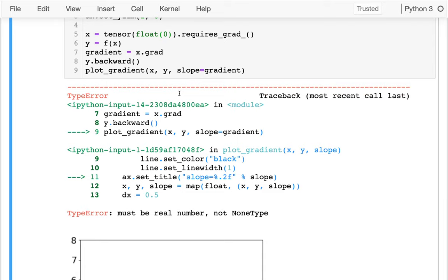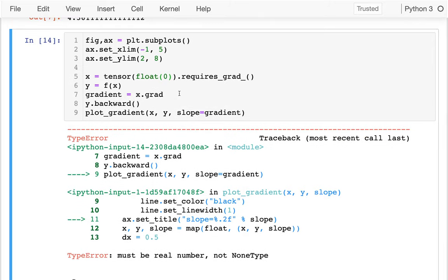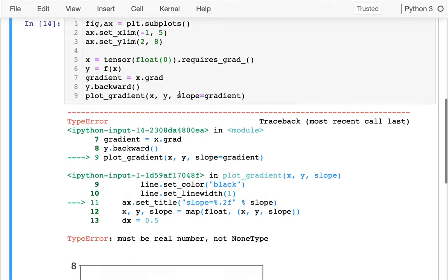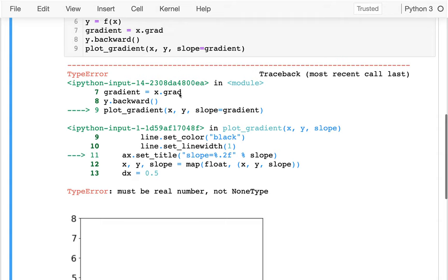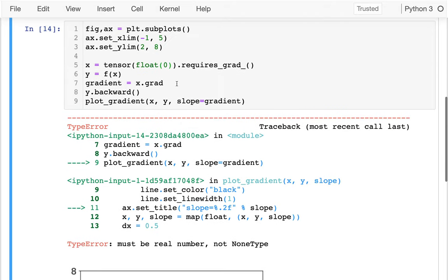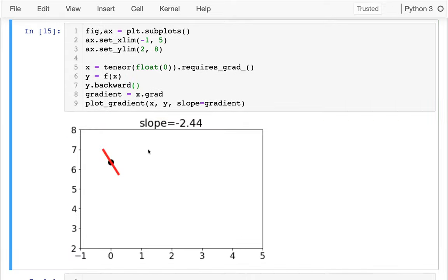And then now what is my problem? So why am I still getting a gradient of zero? Because this is still none. And the reason is that I need to actually call backward before I look at that, of course. Great. And so I can see that that's how the function is at that point. At that point, the function is sloped down pretty sharply. And actually, I could just look at this number. It's negative 2.44.